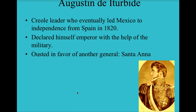The movement is taken over by Agustín de Iturbide, a Creole leader who eventually leads Mexico to independence from Spain in 1820. He declares himself emperor — though put air quotes around emperor, because he's really more like a military dictator. He rises up through the power of the military rather than hereditary rule. He's eventually ousted in favor of another general, Santa Anna, and this becomes a common theme from here on out in Latin America.